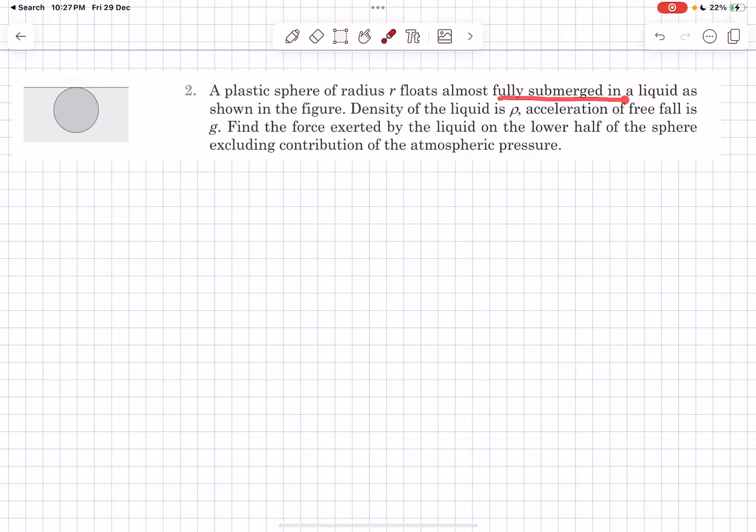The sphere floats almost fully submerged in liquid as shown in the figure. We have to find the force exerted by the liquid on the lower half of the sphere. We need to exclude the force that the fluid applies on the upper half and exclude the contribution of the atmospheric pressure.